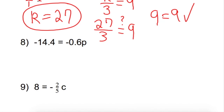Next one: negative 14.4 is equal to negative 0.6p. We have decimals, but stay calm — we can do this. What's happening with the negative 0.6 and the p? If you said multiplication, you are correct. Negative 0.6 is being multiplied by p. So what's the opposite of multiplying by negative 0.6? Dividing by negative 0.6.